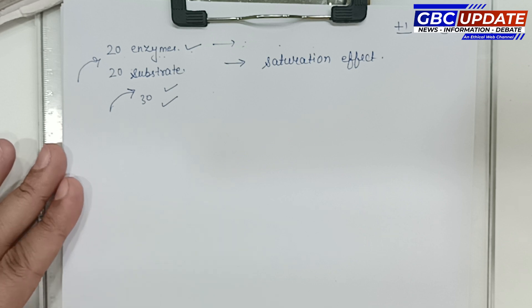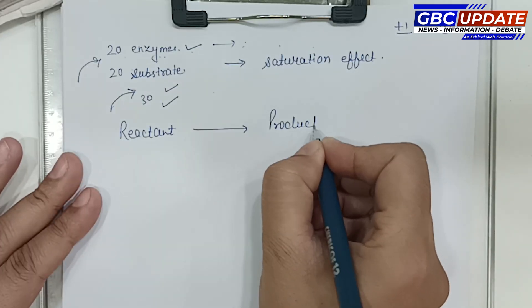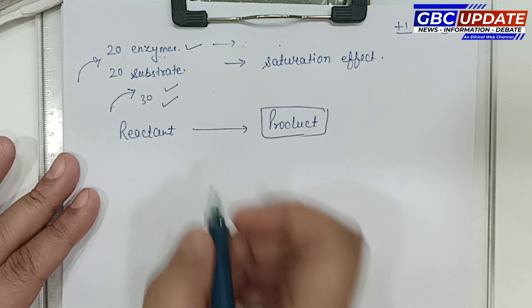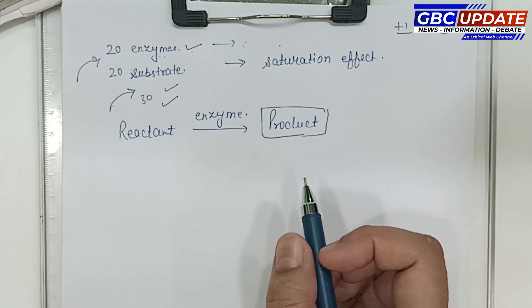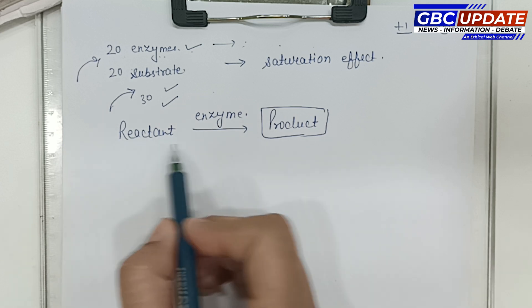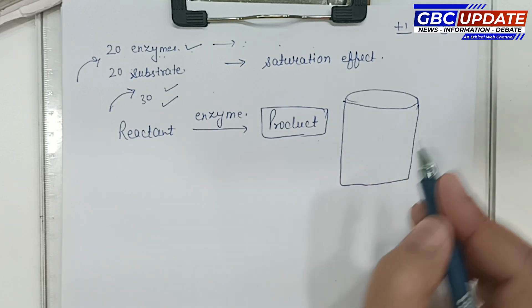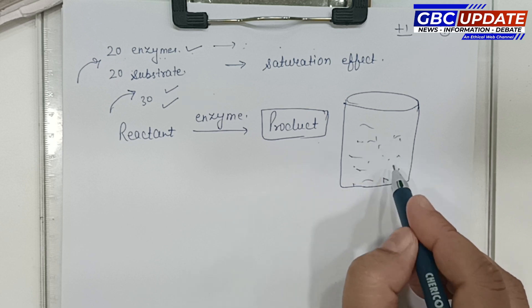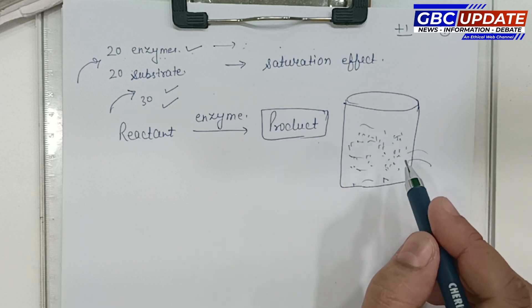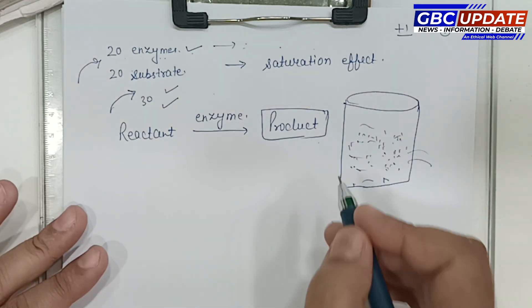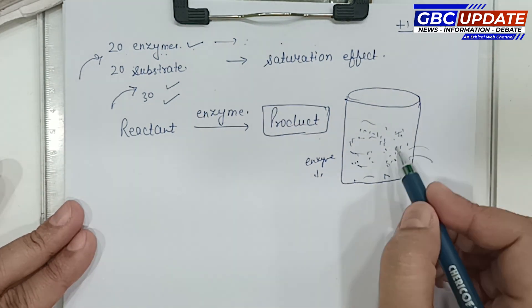The next factor is product concentration. In every reaction catalyzed by an enzyme, there are reactants that become products. If the product accumulates in the reaction vessel and is not removed, it lowers the enzymatic activity, and enzyme activity will gradually reduce.